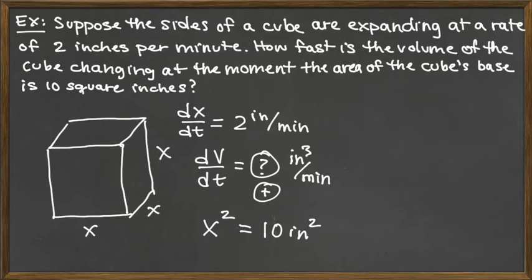To be able to do this related rates problem, we need to be able to relate the variable v with the variable x. So that's going to be the volume equation for this cube. In general, it would be length times width times height, but for the cube, each one of those is equal to x. So we would have x cubed being our equation – volume equals x cubed.